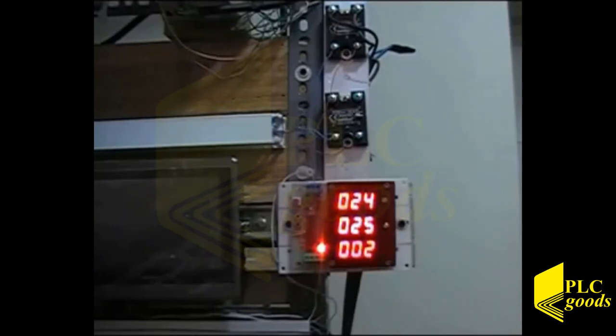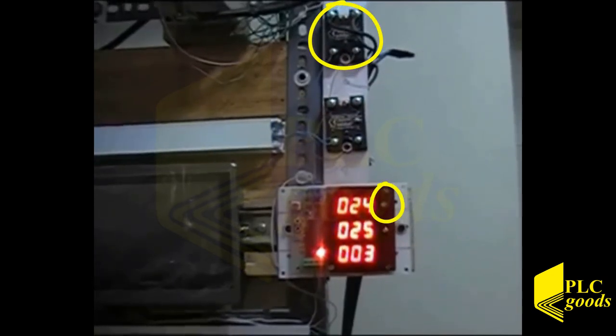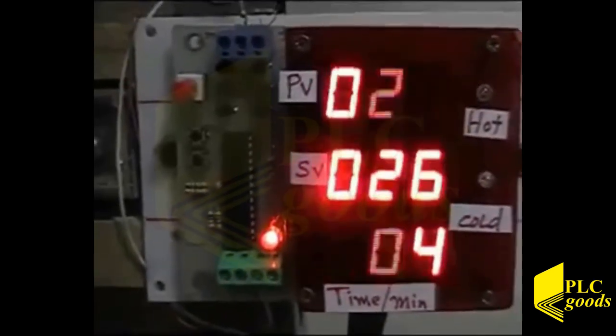Now at time equal to 2 minutes, PV is 24 and SV is 25. The difference is only 1 degree Celsius, so SSR1 and red LED indicator are off.